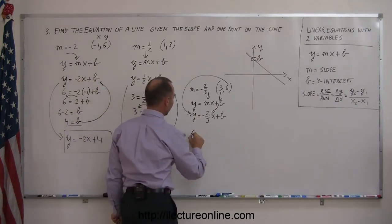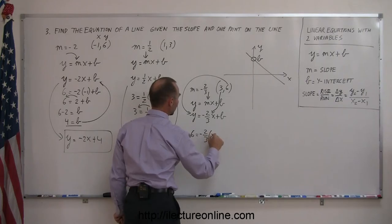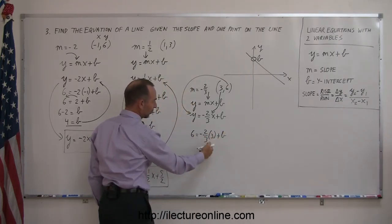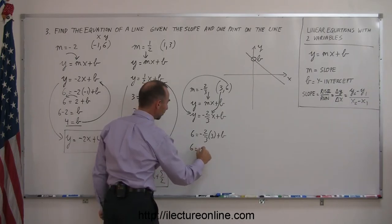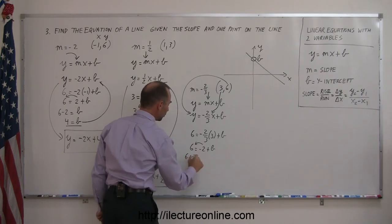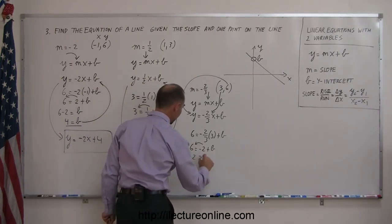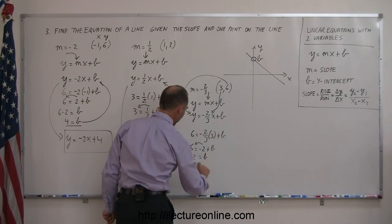So you end up with 6 equals minus 2 thirds times 3 plus b. Notice that 3 divided by 3 is 1, so this can be written as 6 equals minus 2 plus b. Move the negative 2 over the other side, you get 6 plus 2 now, because when you cross the equal sign, just change the sign, equals b, or 8 equals b.